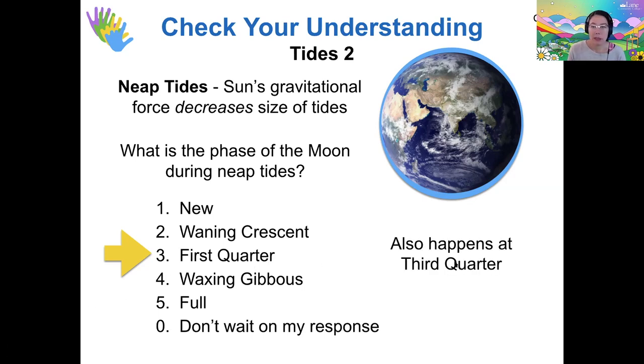So we've got two neap tides per month, two spring tides per month. And then during the intervening phases, they're kind of moving from between those extremes from strong to weak to strong to weak.